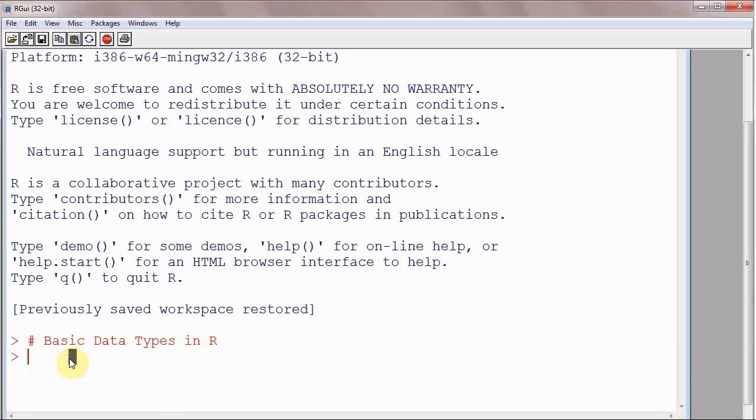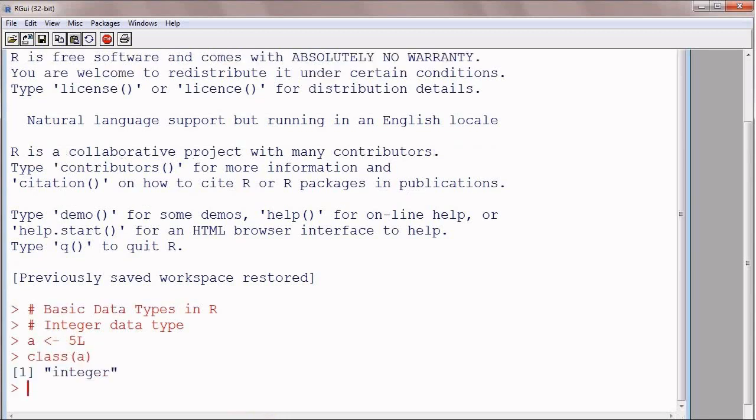And to store integers in a variable, we will use integer data type in R. A is assigned 5L. You must write L with the number to store it as an integer. Now class function is used to find the class of A, and that is integer.